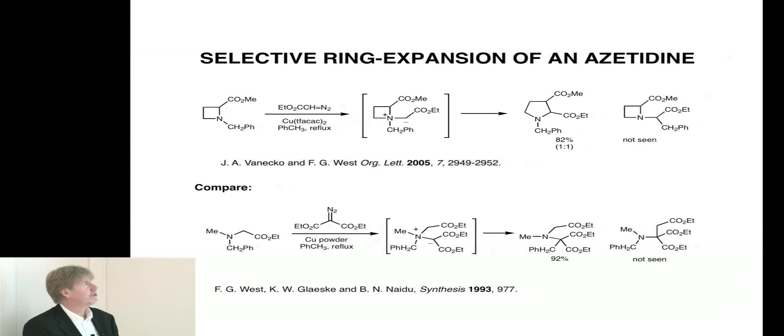That's the opposite of what we saw up here. Why? The difference is in this ylid, the ester-substituted carbon is encased within a strained ring. That ring strain activates this carbon-nitrogen bond so that the inherent preference of a benzyl over an ester is overcome by the release of ring strain. We see only the ring expansion product.